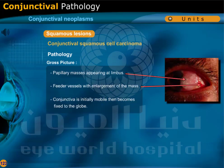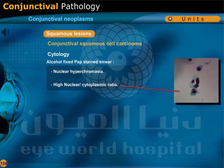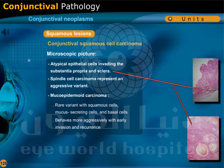The gross picture of invasive squamous cell carcinoma shows papillary masses appearing at the limbus, feeder vessels with enlargement of the mass, and conjunctiva that is initially mobile then becomes fixed to the globe. Cytology on alcohol-fixed Pap stain smear shows nuclear hyperchromasia and high nuclear to cytoplasmic ratio. Microscopically, there are atypical epithelial cells invading the substantia propria and sclera. Spindle cell carcinoma represents an aggressive variant.